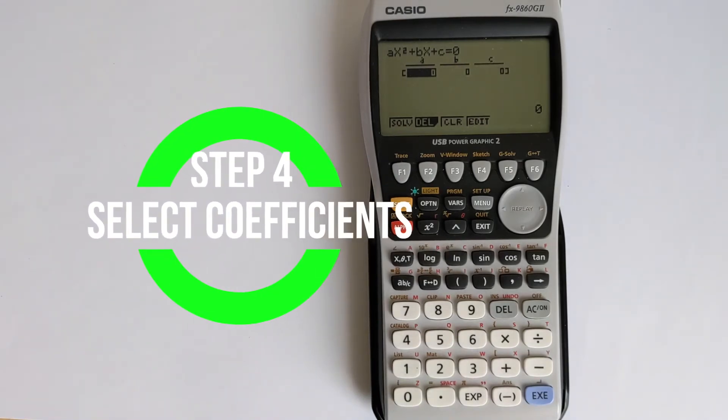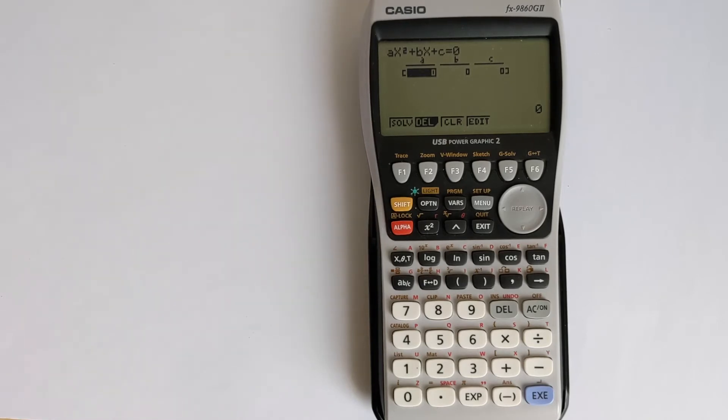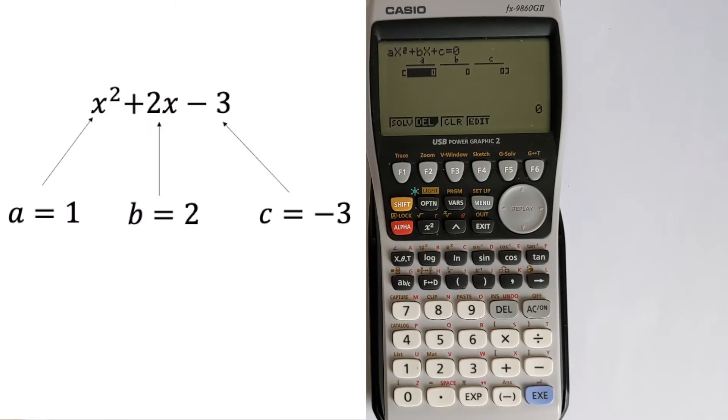That now lets us input our coefficients. And so I've shown you how these match up on the left. So to enter the coefficients, we need to look at our equation. So A is going to be 1 because nothing in front of x². B is going to be 2. And then our constant term is C, which is -3.